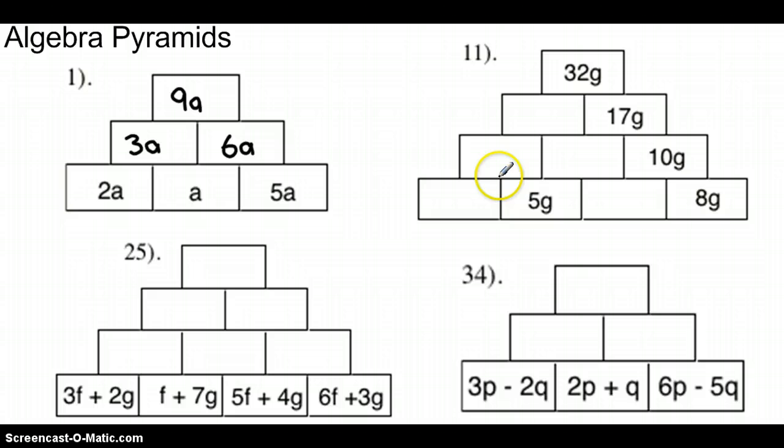Over here is one where some of the bricks at the top have been filled in. So we start from the top, we've got 32g, 17 of which are below on the right hand side. So let's work out how much is left. Well that must be 32 take away 17, 15g in that box there.